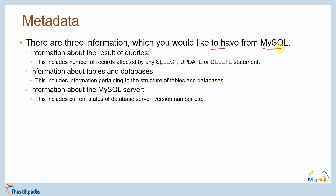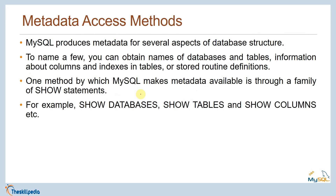There are three types of information you would like to have from your MySQL server. First, information about the result of your queries — this includes the number of records affected by any SELECT, UPDATE, or DELETE statement. Second, information about tables and databases — the structure of a given table. Third, information about the MySQL server itself — current status, version numbers, etc.